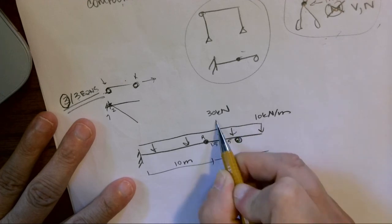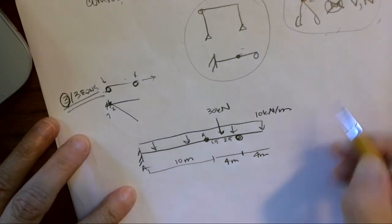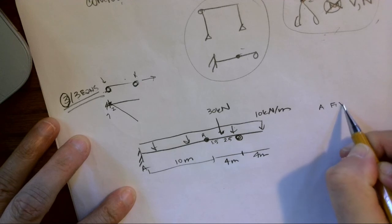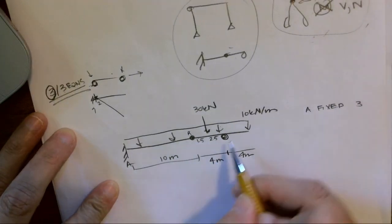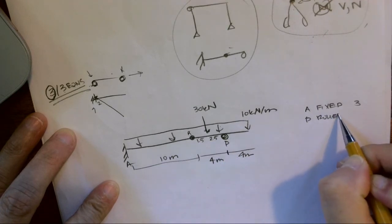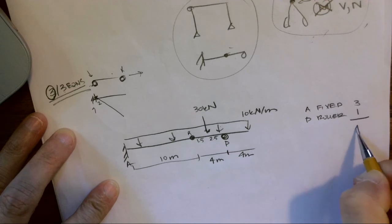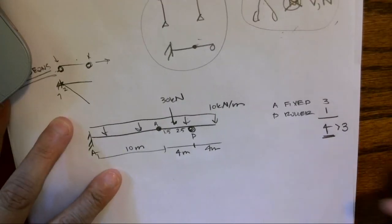I know this is kind of messy. At A we have fixed, and at fixed we have three unknowns. At D I have a roller, and at a roller I have one unknown. So we've got four unknowns—four is greater than three.